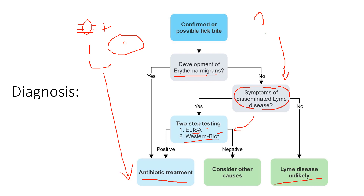If you don't have symptoms of disseminated Lyme disease, no rash, but only a possible tick bite, Lyme disease is extremely unlikely. Not all ticks carry Lyme — only about 20% of deer ticks could carry it, and even then the tick needs to be on you for at least 48 to 72 hours for Lyme to be transmitted effectively. So transmission, even when it happens, is not always clear-cut.